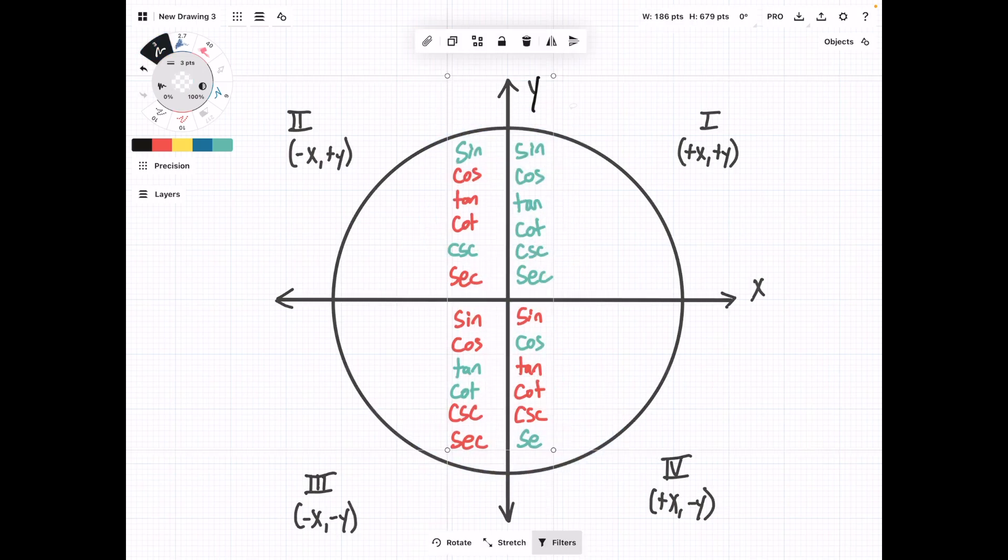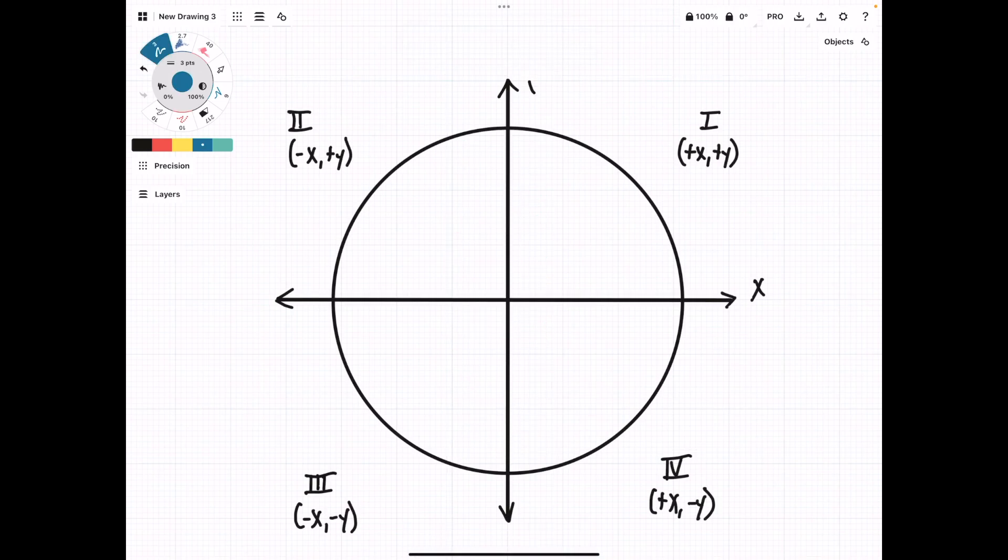The last thing to talk about is that these quadrants will sometimes be given to you in a problem. So, for instance, you'll be told that the angle is in quadrant 2, and it has a sine value of 4 over 5. So you're going to be over here in quadrant 2. Sine is going to be some value. Say it was 4 over 5, so it would be 4 over 5, and you have to figure out what this value is.